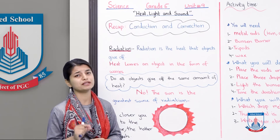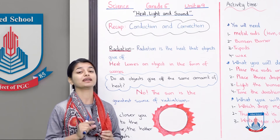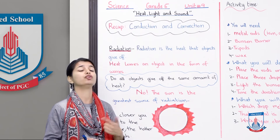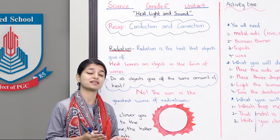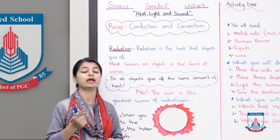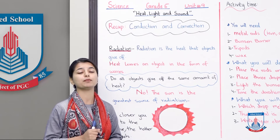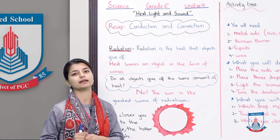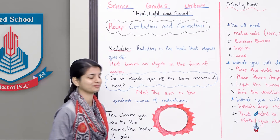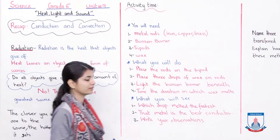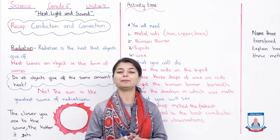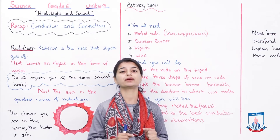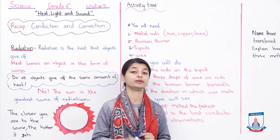So this is very simple — it was a small topic. We covered what radiation is and gave an example or two. Now let's move to the next board and I'll tell you about an experiment you need to conduct about conduction. This is from your textbook — I'll quickly tell you how it's done and what you have to do.